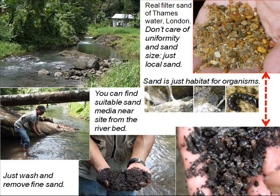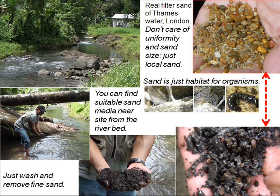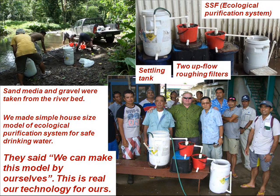Real filter sand from the Thames Water plant in London does not require uniformity or specific sand size — this is just local sand. Sand is simply a habitat for organisms. We can find suitable sand media from the riverbed — just wash it and remove fine sand. Sand media and gravel were taken from the riverbed. We made a simple house-scale model, and they said: we can make this model by ourselves.